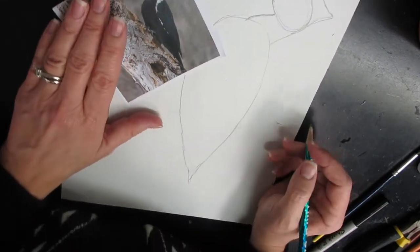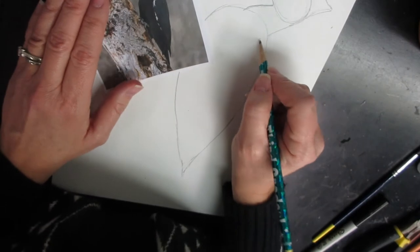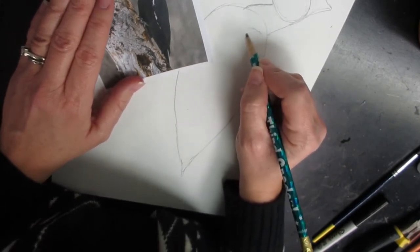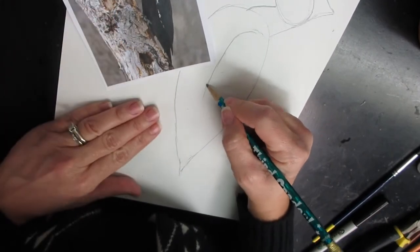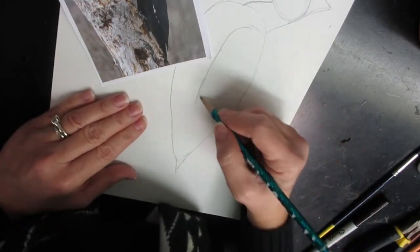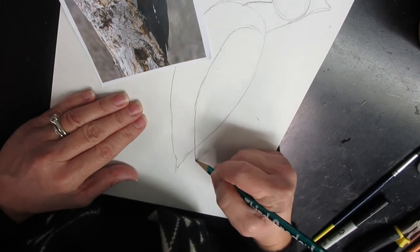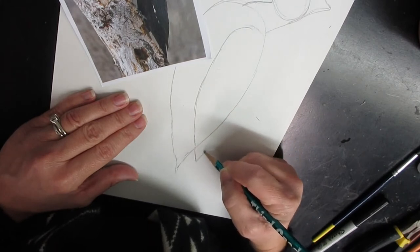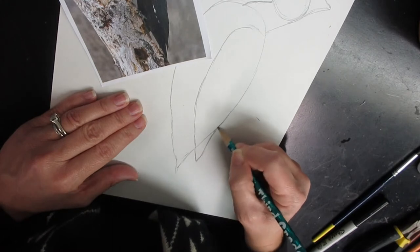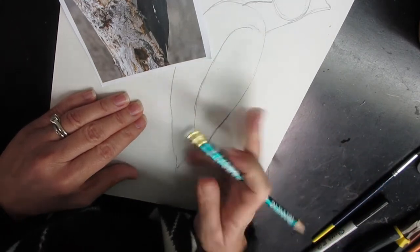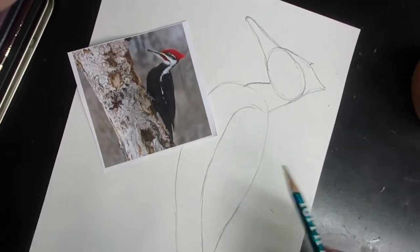There we go. So I've got all my main shapes on here. I'm going to start putting my wing in and it starts just below the neck. And it's going to sweep right down towards the bottom of the body and it comes off the body just a little bit. All right.